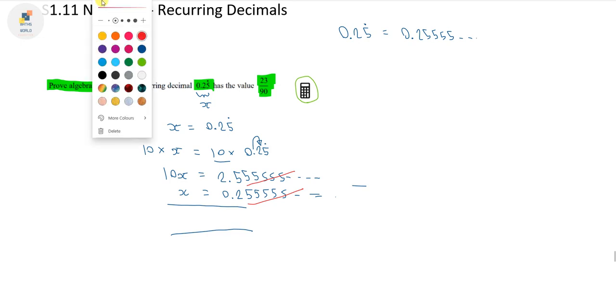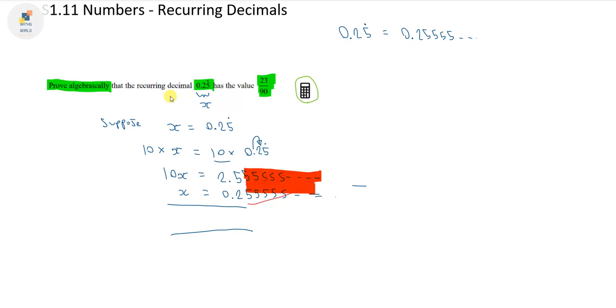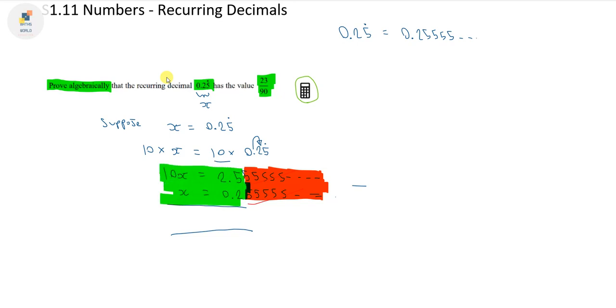We don't even have to worry about any of this stuff over here. We can just block it out and disregard because all these 5 recurring things have cancelled each other out. So the only bit we need to worry about is this section. We put the decimal point directly below where the other two decimal places are. We've got 5 take away 2 is 3, 2 take away 0 is 2, and 10x take away x is 9x. That's what we've got now.